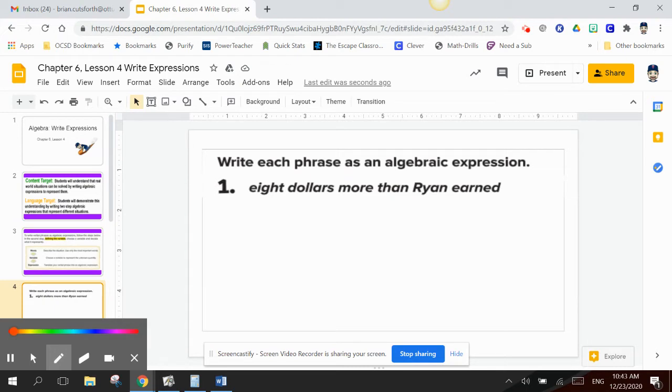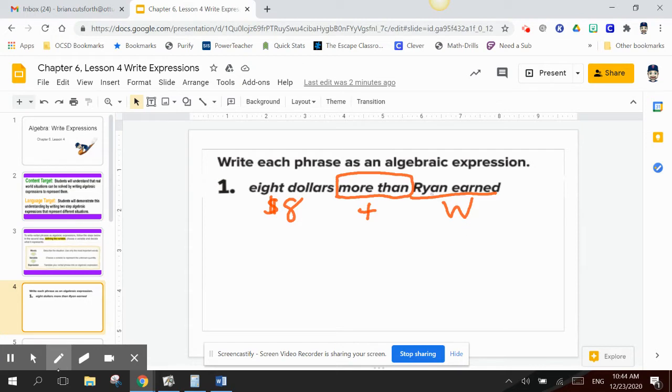So let's look at the first example. Eight dollars more than Ryan earned. So what don't we know? We don't know how much Ryan earned. That's our variable. So that for me will be my W. So then I go back, more than. When I see the word more than, I know that that is an addition sign because we're adding to what Ryan already has. And how much more? That is eight dollars more. So to write my algebraic expression, I'm going to write it as Ryan earned W plus, that's more than, eight dollars.